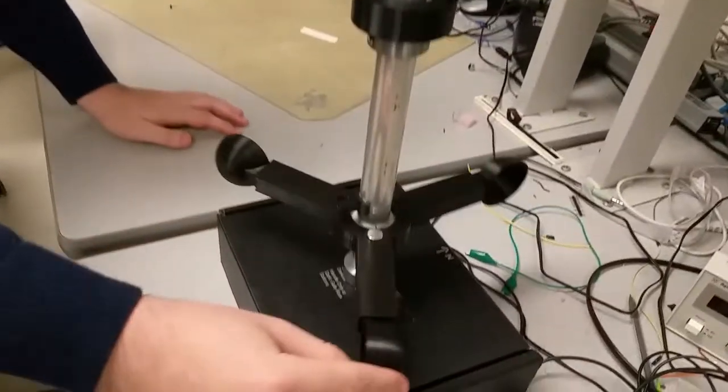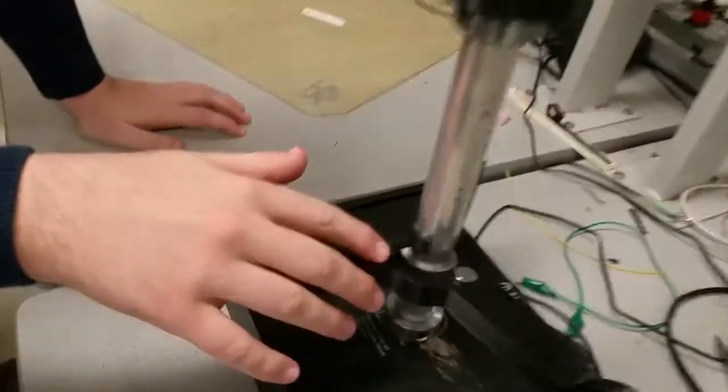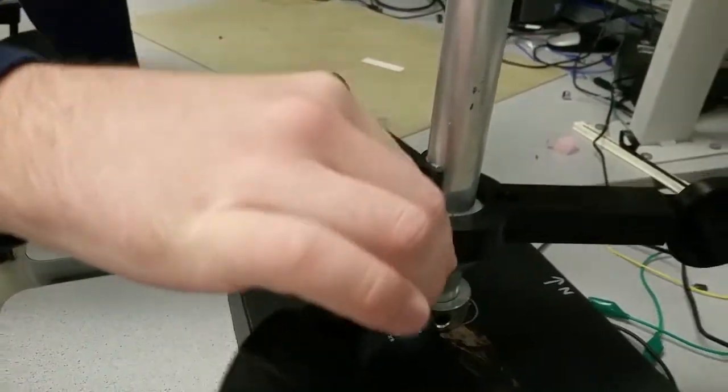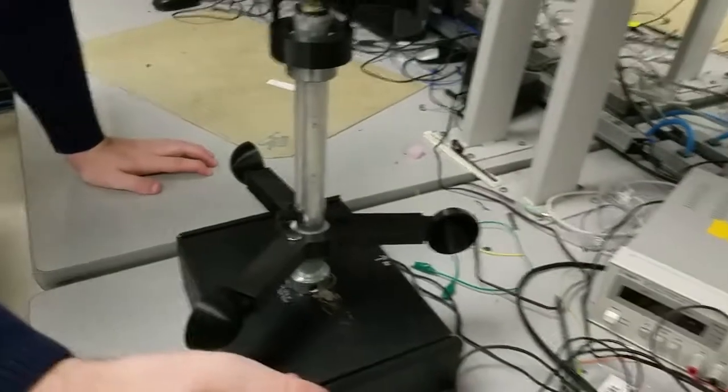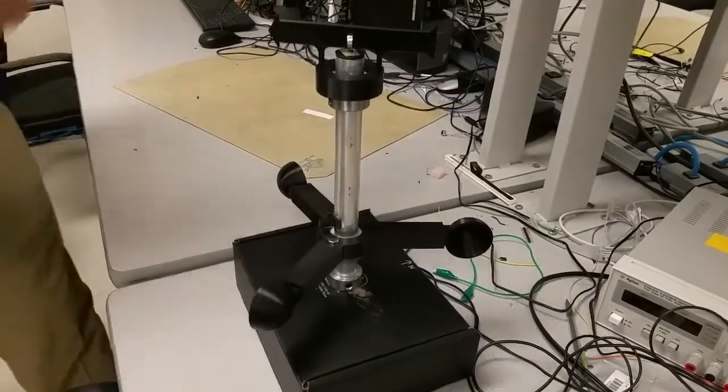Underneath we have the set of wind cups which measures the wind speed. There's a hall effect sensor here which sends out a pulse whenever this magnet comes by. These wind cups blow in the wind regardless of which direction the wind is blowing because they're oriented with three cups at 120 degrees each.